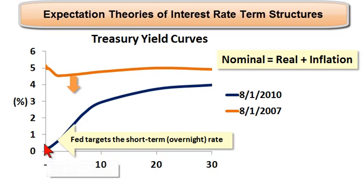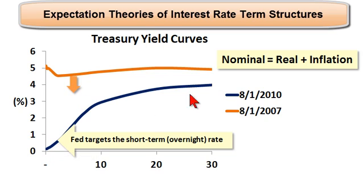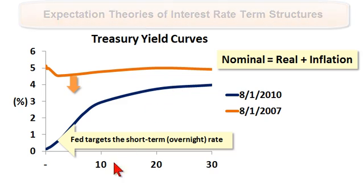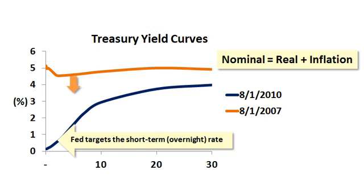So based on what they do with the money supply, they can directly manipulate the short-term rate. But the private marketplace supply and demand overwhelms anything they can do in terms of the long maturities.